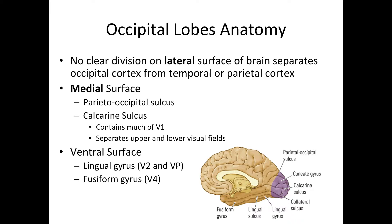In this chapter, we're going to talk a little bit about the anatomy of the occipital lobe, then about the different pathways, and lastly we'll talk about disorders of the visual pathways and visual system.